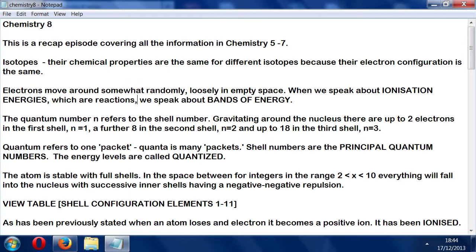The atom is stable with full shells. In the space between integers in the range 2×<10, everything will fall into the nucleus with successive inner shells having negative repulsion. Electrons in inner shells repel electrons in outer shells, making that outer shell electron much easier to remove. This is the shielding effect.